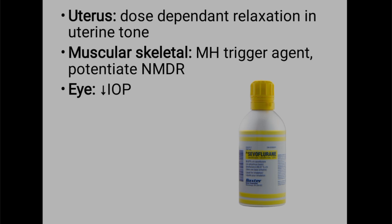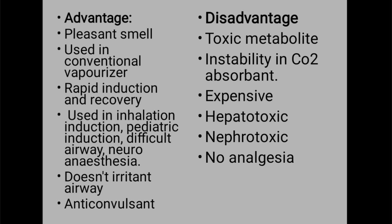Regarding musculoskeletal effects: sevoflurane is a malignant hyperthermia trigger agent. It potentiates non-depolarizing muscle relaxants. It also affects the uterus and musculoskeletal system, and reduces intraocular pressure.